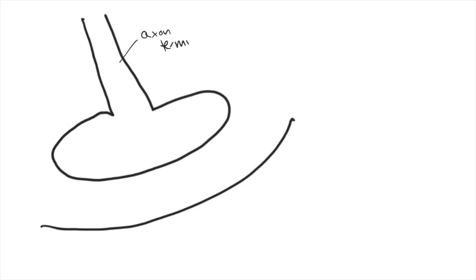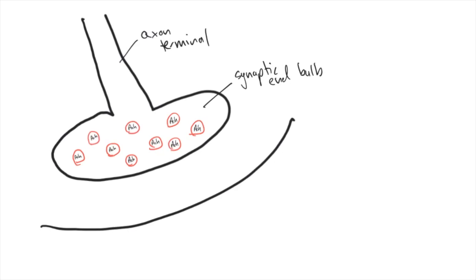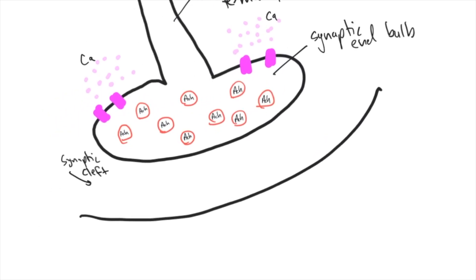We're going to start by identifying our axon terminal with our synaptic knob or bulb. Inside the synaptic knob are vesicles filled with our neurotransmitter acetylcholine. Around the margin of the cell membrane of the synaptic knob are voltage-gated calcium channels. Moving to the space between structures, that space is called the synaptic cleft — where acetylcholine moves to activate the ligand-gated channels on the motor end plate, which are our sodium channels. When activated, they allow sodium to perfuse through the cell membrane into the muscle tissue.